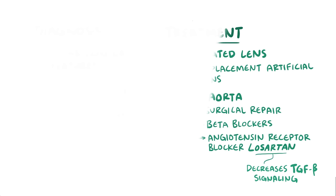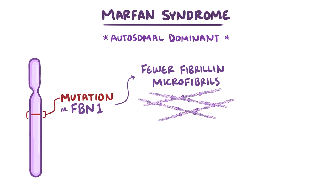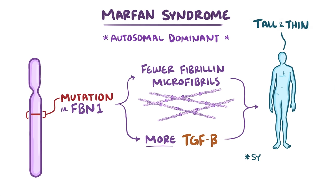As a quick recap, Marfan syndrome is an autosomal dominant genetic disorder caused by mutations in the FBN1 gene. This leads to fewer fibrillin and microfibrils in certain connective tissues, which compromises their strength and elasticity, as well as upregulates TGF-beta signaling. The end result is an individual with a tall, thin body with symptoms of loose connective tissue, most importantly in the aorta.